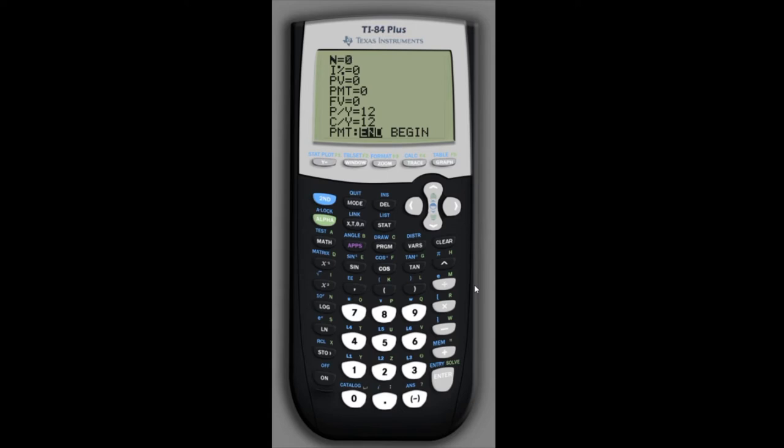This is a 30-year loan with monthly payments, so N is going to be 12 times 30, or 360. The interest rate will start with 4% and we'll change that to 3.5% later. The present value or principal on the loan is $200,000. The payment is what we want to solve for, and we'll leave future value blank because that doesn't come into this problem. PY and CY both should be 12.